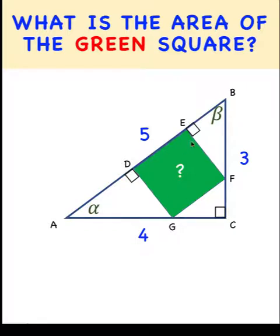then alpha and beta must be complementary. Their sum must be 90 degrees so that if we include this other 90 degree angle, the sum of the three interior angles of triangle ABC is 180 degrees.